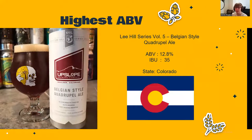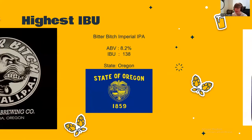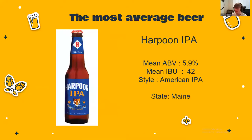The beer with the highest IBU is the Bitter Bitch Imperial IPA with an IBU of 138 from the state of Oregon. The most average beer is the Harpoon IPA with a mean ABV of 5.9, IBU of 42, the most common style which is the American IPA, and it is from the state of Maine.